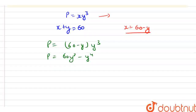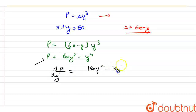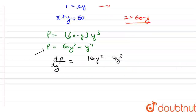Now, let's differentiate P with respect to y. So we have dP/dy is equal to 180y² minus 4y³.